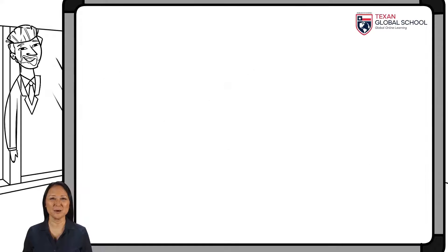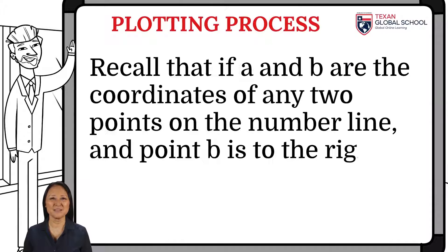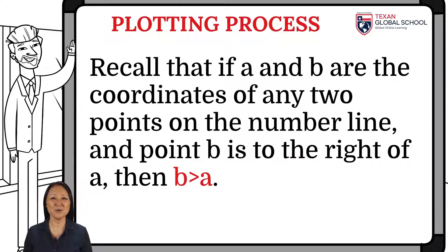It is important to remember that if A and B are the coordinates of any two points on the number line, and point B is to the right of A, then B is greater than A, or equivalently, A is less than B.